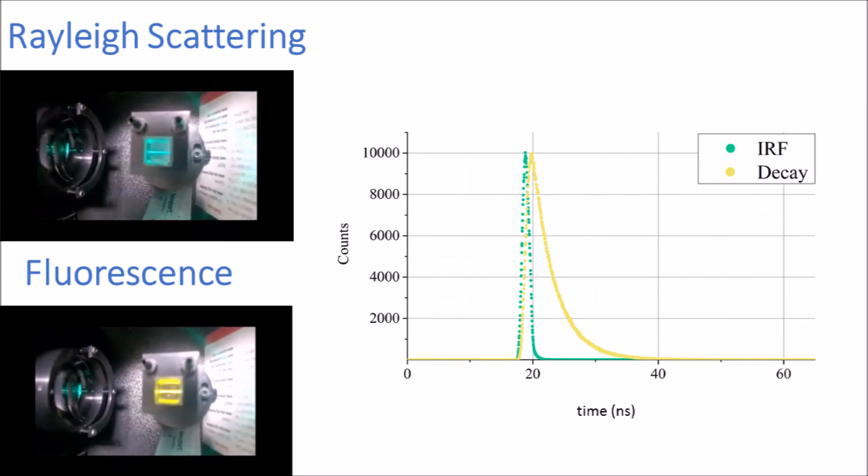The histogram shown was quite a crude one. In most measurements, we would measure to a peak count of at least 10,000 counts, and we would typically have at least 500 bins per fluorescence decay.